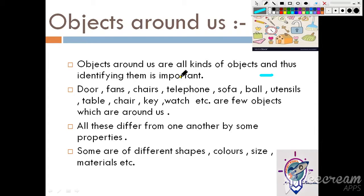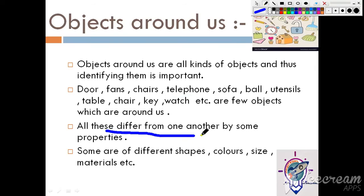Doors, fans, chair, telephone, sofa, bell, utensils, table, key, watch — these are all examples of the few objects which we see around us, as you can also see in the diagram. All these differ from one another by some properties.